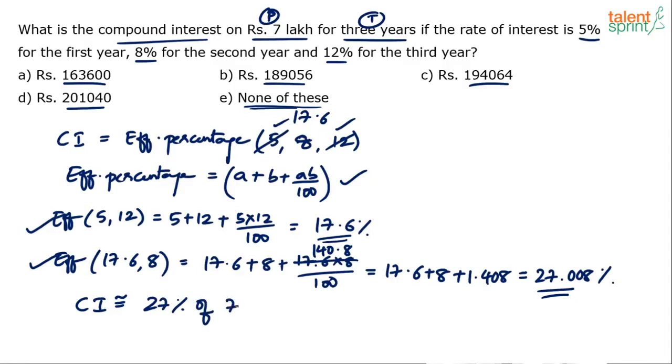27% of 7,00,000. What is 10% of 7,00,000? 70,000. What will be 20%? 1,40,000. What will be 30%? See 27% is like 30% minus 3%. Easy calculation. 27 is 30 minus 3. So 30% of 7,00,000 is 2,10,000. 3% is 21,000. So 2,10,000 minus 21,000 is 1,89,000. It is 1,89,000.